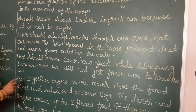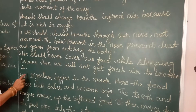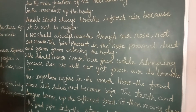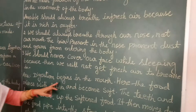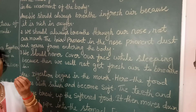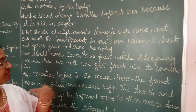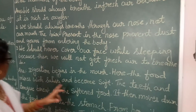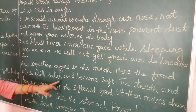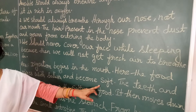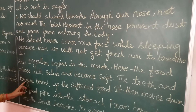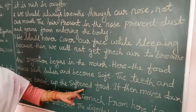Question number 6, answer number 6: How does digestion of food take place? Digestion begins in the mouth. When we eat the food, the food is broken down. The food is mixed with saliva and it becomes soft. The teeth and the tongue break up the softened food.